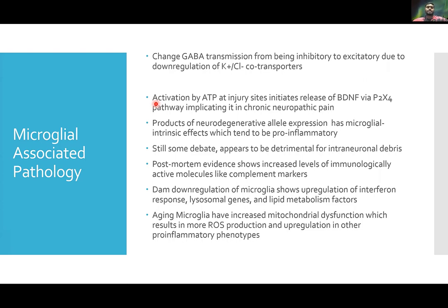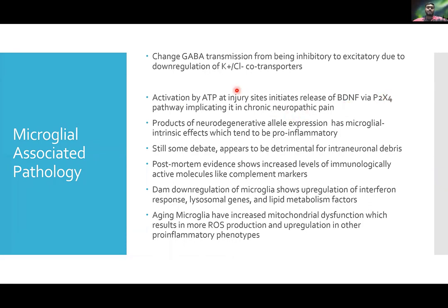The process behind neuropathic pain is complex, but briefly: it's activated by ATP, which can cause release of brain-derived neurotrophic factors via the P2X4 pathway. This changes GABA transmission from inhibitory to excitatory through downregulation of potassium-chloride co-transporters in neurons, which ultimately prevents the inhibition of pain receptors in the spinal lamina.